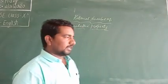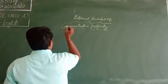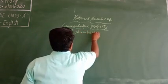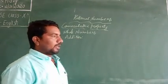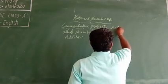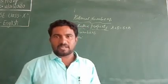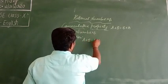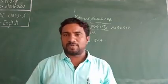I will take the commutative property on the addition operation. First, I will consider the set of whole numbers under addition operation. The commutative property states that A plus B is equal to B plus A. This is the commutative property on addition operation, where A and B are any two whole numbers.